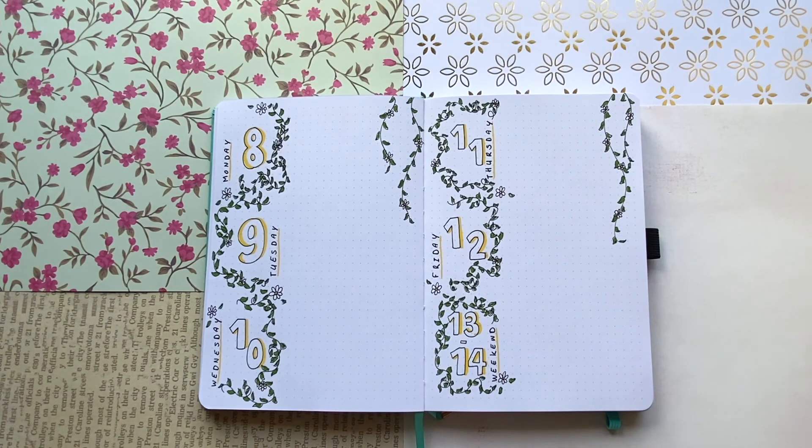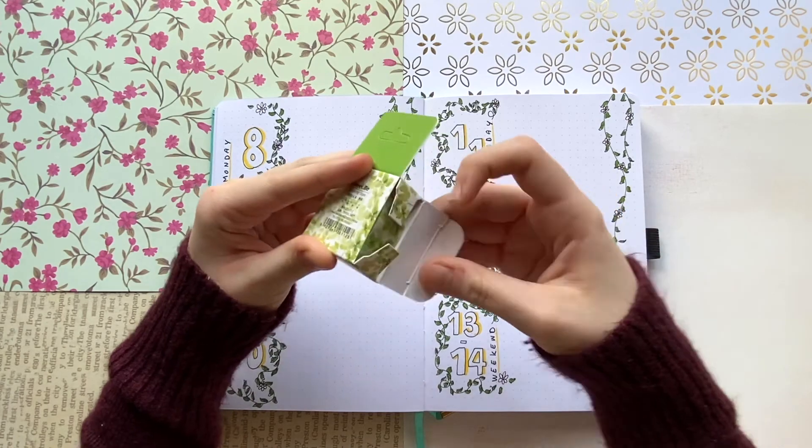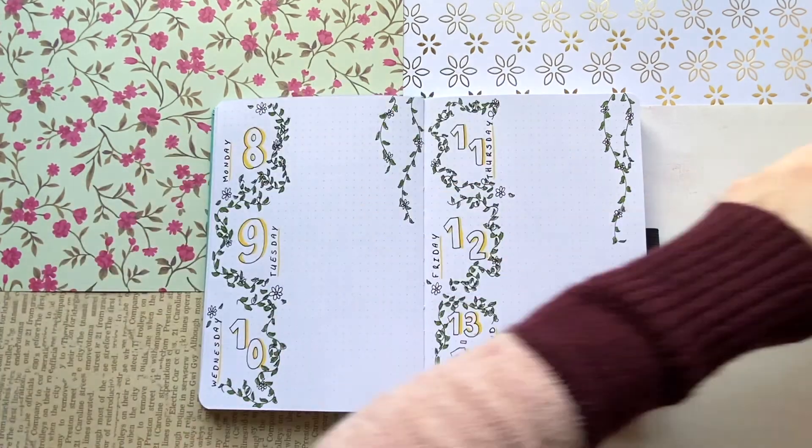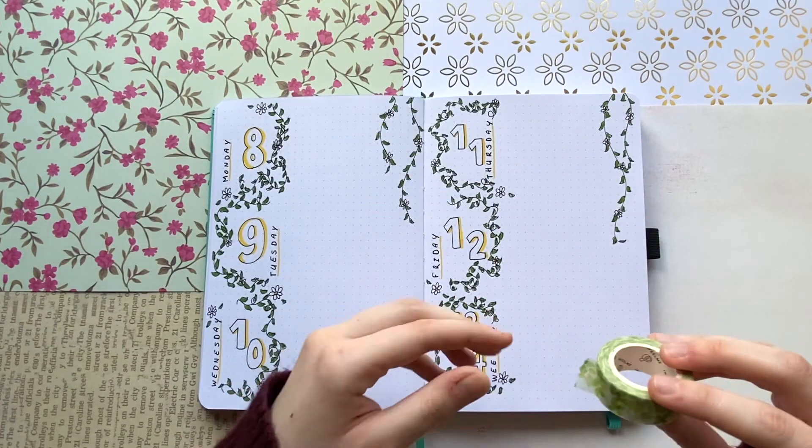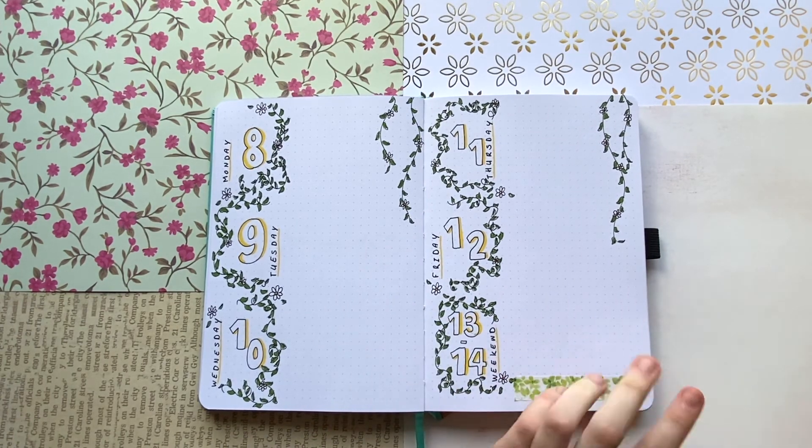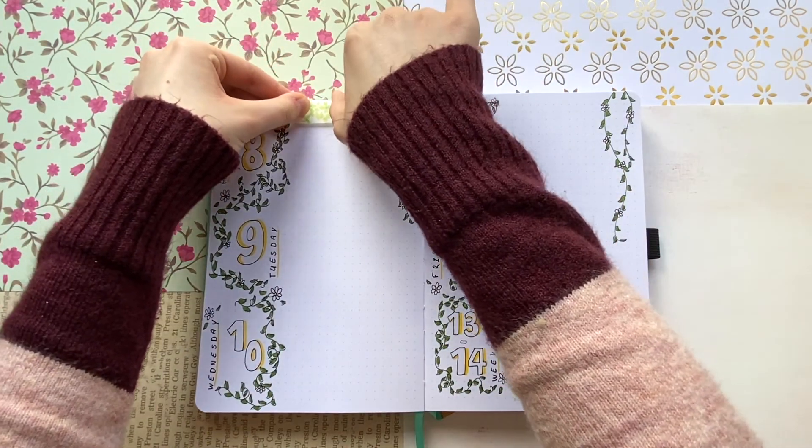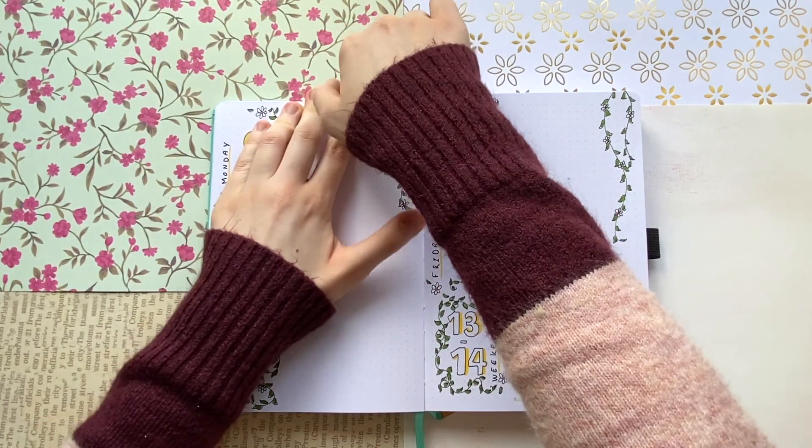And finally we are adding the washi tape. I didn't really think of the washi tape when I first planned out for this spread, but I think it turned out pretty cute regardless. I just added a little bit of washi tape on the bottom right-hand corner as well as the top left, and I think it just adds a little bit of that light green that we needed. And I think it looks really awesome.